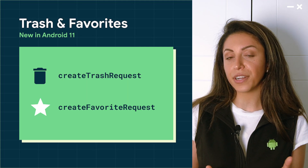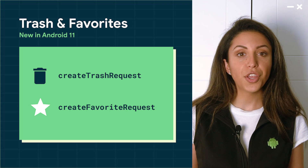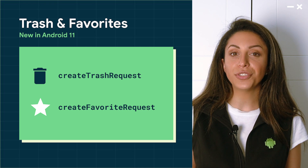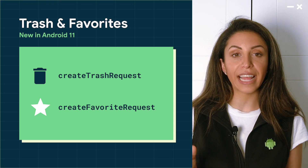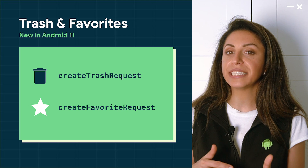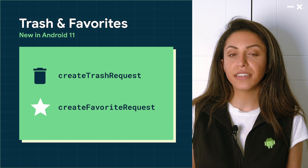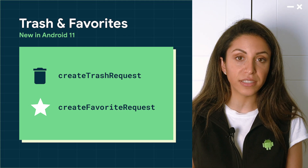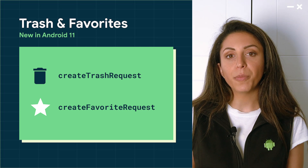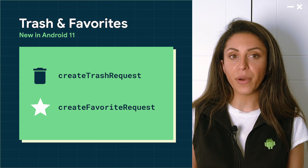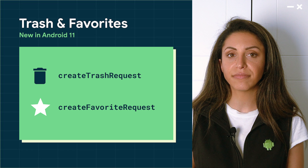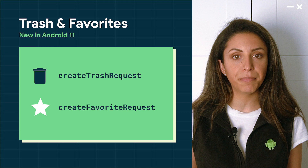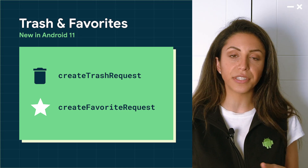We created a new MediaStore concept of trash. You can think of this like the recycle bin on a PC. Apps can now choose to trash a file instead of deleting it. This gives the user a chance to recover the file later. Trashed files will be hidden by default, but can be displayed if an app wants to. A trashed item will be automatically deleted by the OS after 30 days. Trashed files can be untrashed at any time before its expiration by an app that has edit access to it or with user consent.